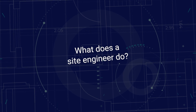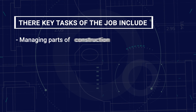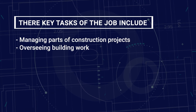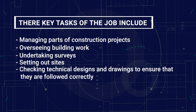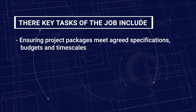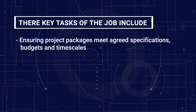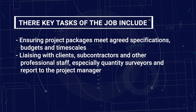What does a site engineer do? Site engineers provide technical advice and manage parts of a construction project, supervising the staff on site and ensuring that their packages are completed on time and within budget. Key tasks include managing parts of the construction project, overseeing building work, undertaking surveys, setting out sites, checking technical designs and drawings to ensure they are correct as per requirements, supervising contracted staff, ensuring project packages meet agreed specifications, budgets and timescales, liaising with clients, subcontractors and other professional staff — especially quantity surveyors — and reporting to the project manager.